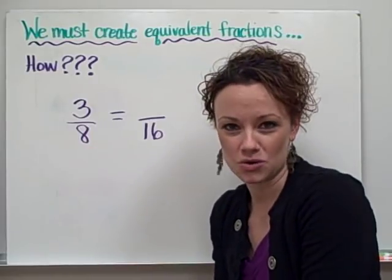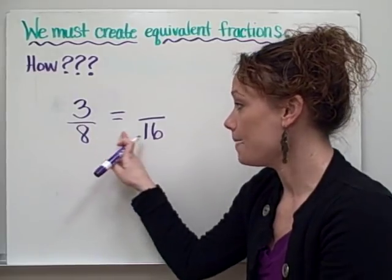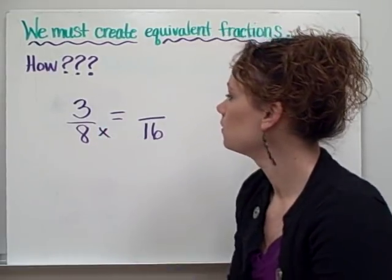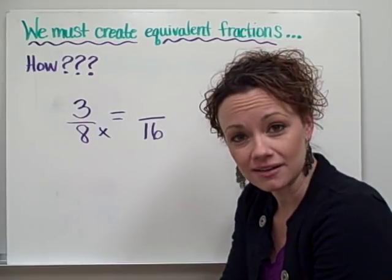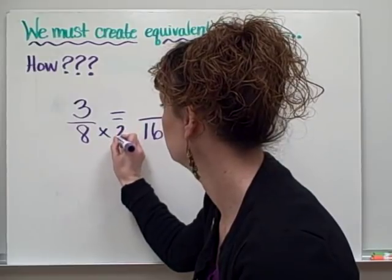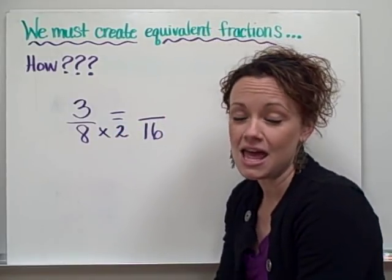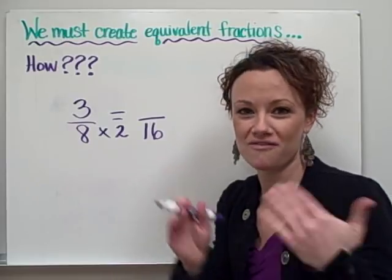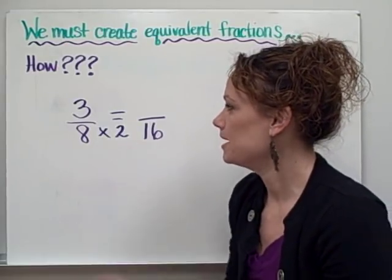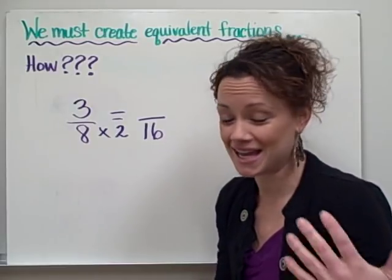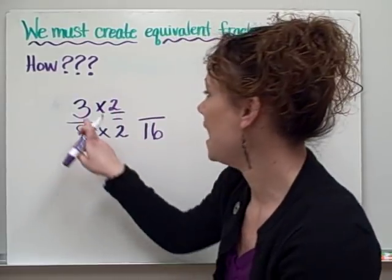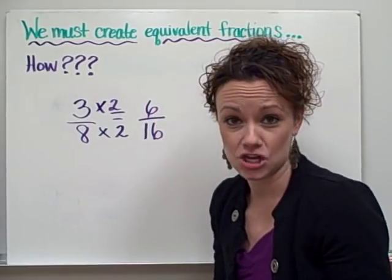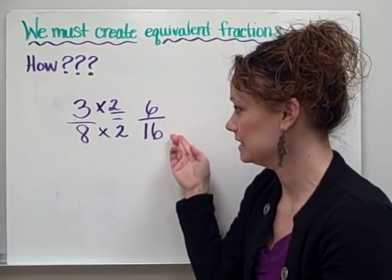Well, normally you can either use multiplication or division. If you notice that your denominator is going up, as in this example, you're going to use multiplication. So we need to ask ourselves, how do we get from 8 to 16 using multiplication? And if you know your fast facts, you know that 8 times 2 will give you 16. Now there's a rule with equivalent fractions. When creating them, whatever you do to the numerator, you must do to the denominator, or vice versa. So here we multiplied our denominator by 2, so we must also then multiply our numerator by 2. And when we have 3 times 2, we get 6. So we have just created an equivalent fraction that shows that 3 eighths is equivalent to 6 sixteenths.